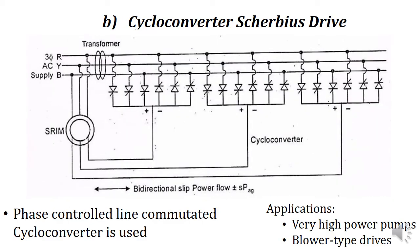Next we will discuss the cycloconverter Scherbius drive. The basic circuit consists of a slip ring induction motor, a phase-controlled line-commutated cycloconverter, and a transformer. This transformer is necessary in order to minimize the rating of the thyristor switches; otherwise we would need thyristor switches of very high rating to connect to the supply mains. These drives are used only for very high power pump and blower type applications.